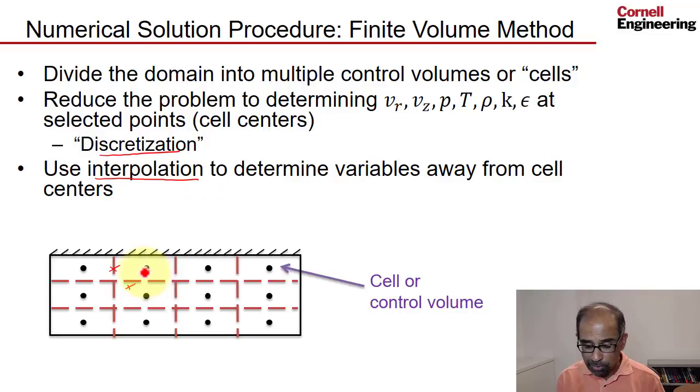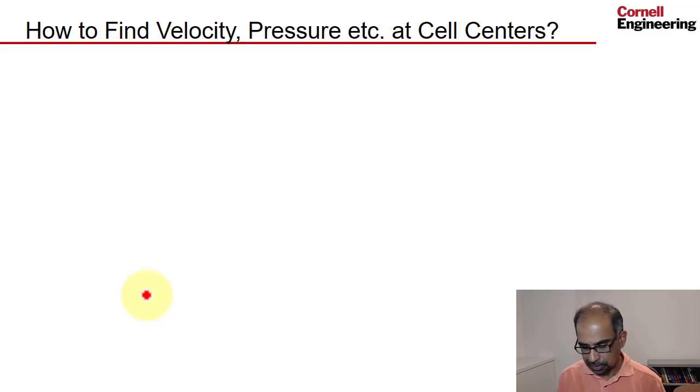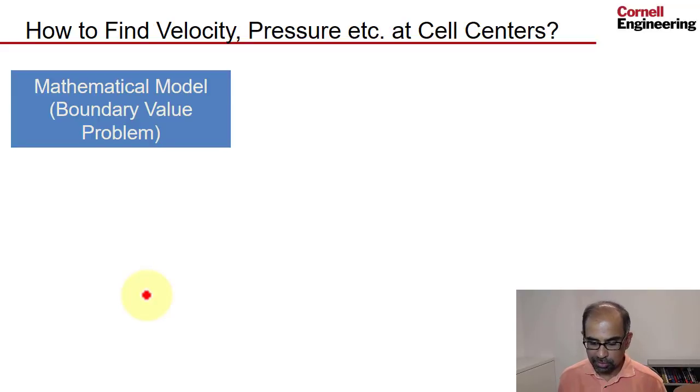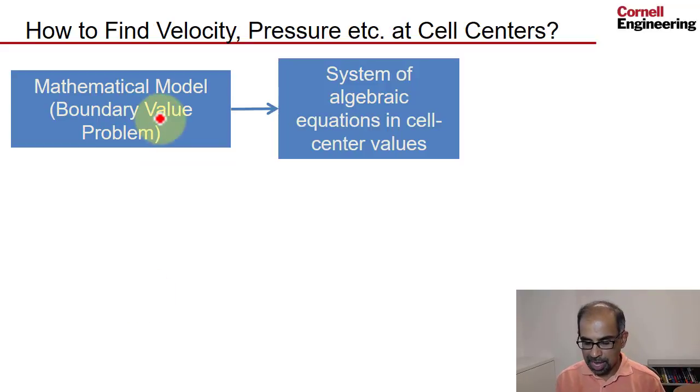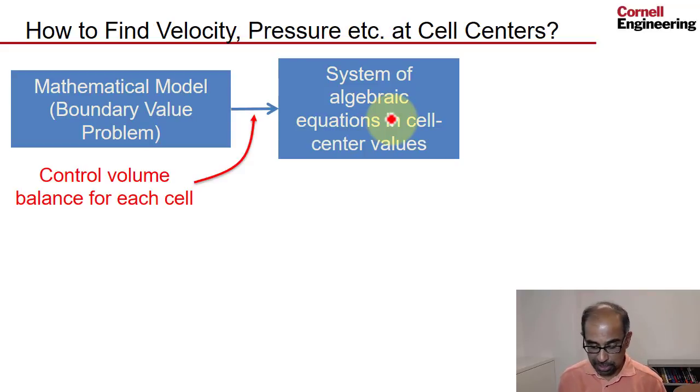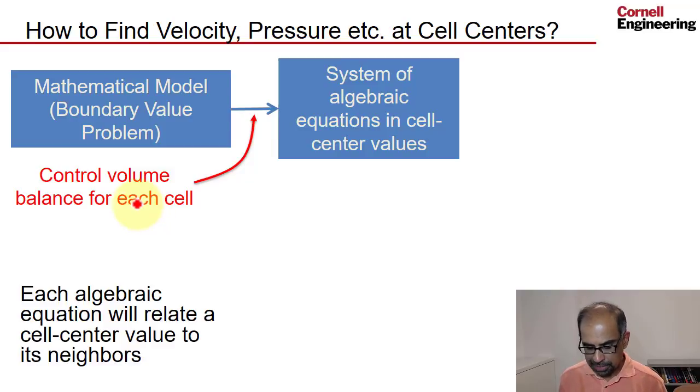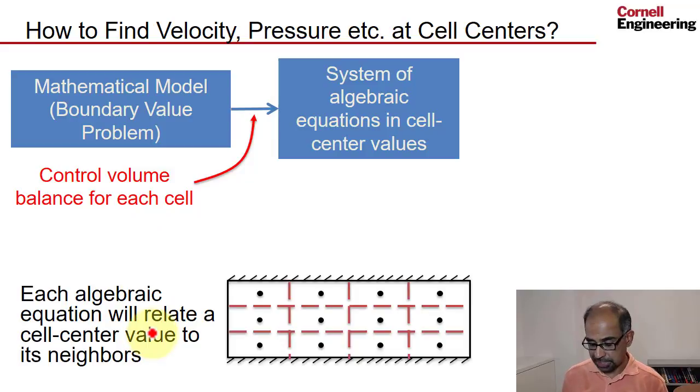So the crux of the problem is how do we determine these cell center values of our seven variables? Velocity, pressure, et cetera, at the cell centers. So what you do is, or what Fluent will do is, it'll take our boundary value problem and it'll derive a system of algebraic equations in the cell center values. And we'll do this using a control volume balance for each cell.